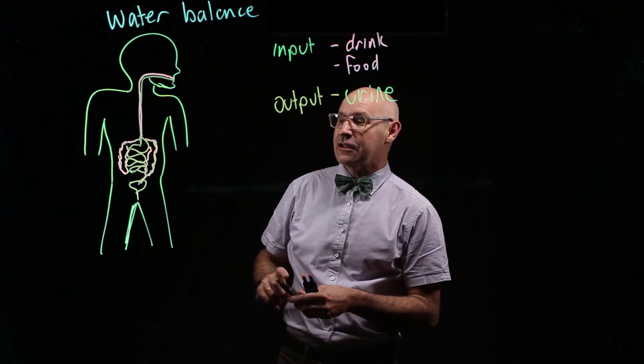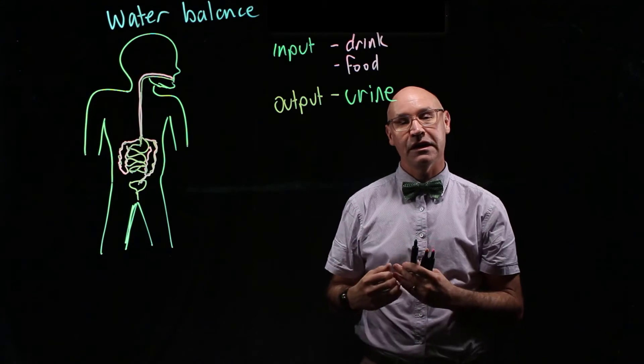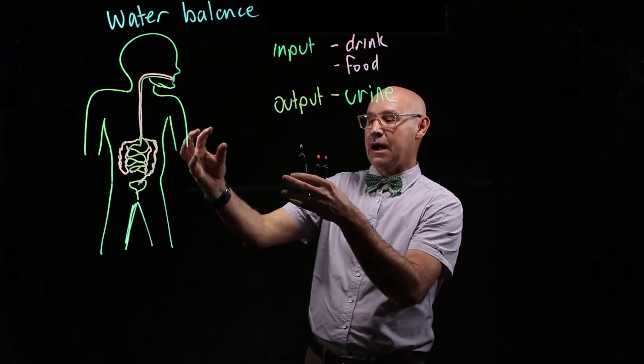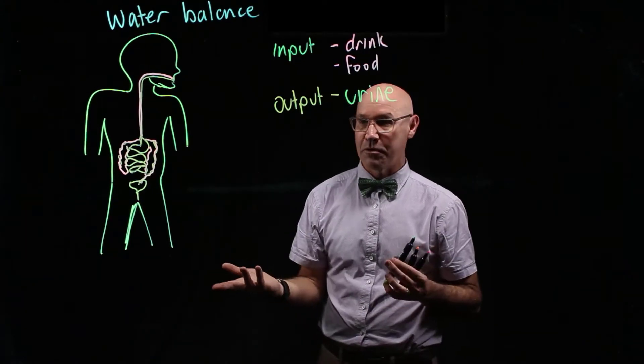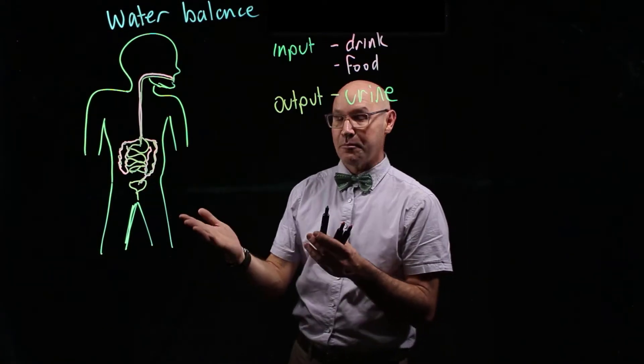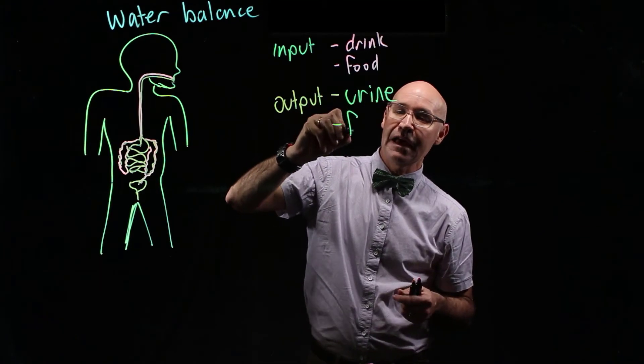That's where the blood is filtered through the kidneys, and that's where the amount of water that gets passed into the bladder is controlled through the antidiuretic hormone. It stays in the bladder and then it gets passed as urine. As I mentioned, some water is also lost through feces.